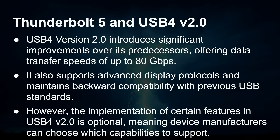USB 4 v2 introduces significant improvements over its predecessor, offering transfer speeds up to 80 gigabits per second. It also supports advanced display protocols while maintaining backward compatibility. However, the key point is that a lot of the features in USB 4 v2 are optional — a manufacturer can claim USB 4 v2 compatibility without implementing all of those functionalities. There's a minimum set, and quite a lot is optional.